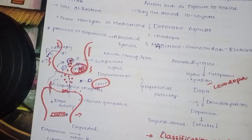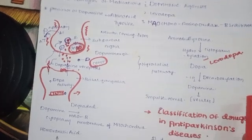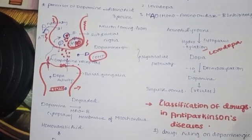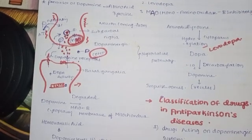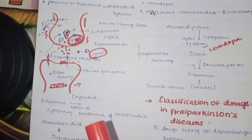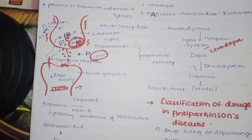When dopamine levels decrease, Parkinson's disease develops. When dopamine levels are decreased, an imbalance occurs — the cholinergic levels become excessive as an alternative.